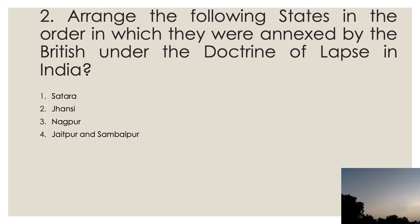Question two: arrange the following states in the order in which they were annexed by the British under the Doctrine of Lapse in India. Lord Dalhousie was associated with the Doctrine of Lapse, under which any ruler in India dying without a natural male heir to the throne would have their state annexed by the British. Adoption was not recognized in most cases, which led to a lot of opposition by the native rulers.